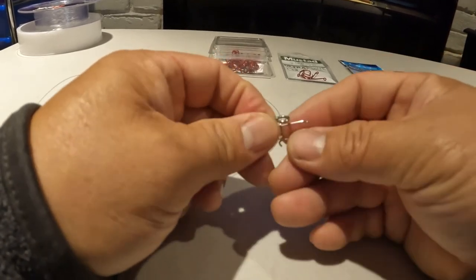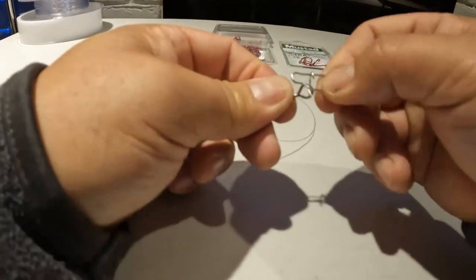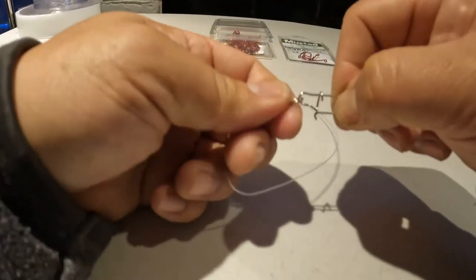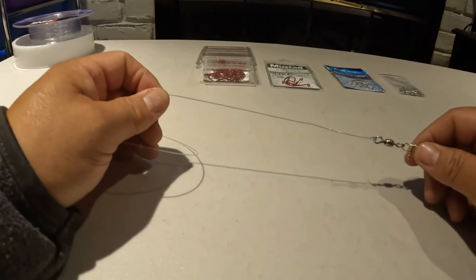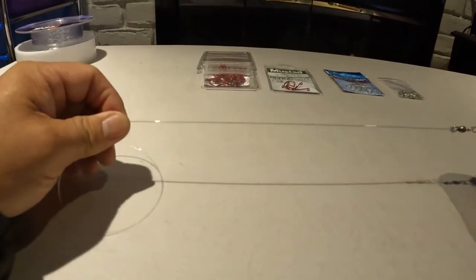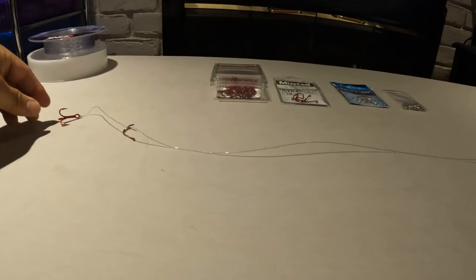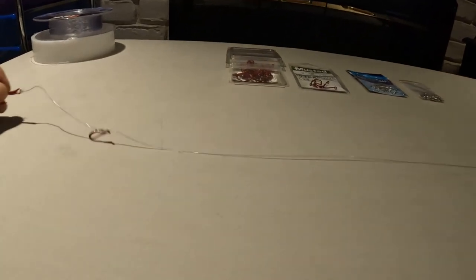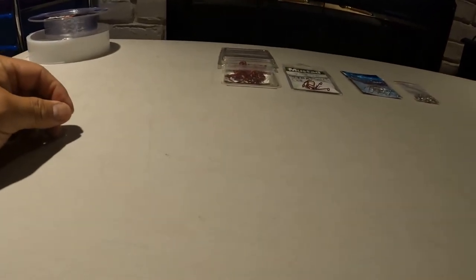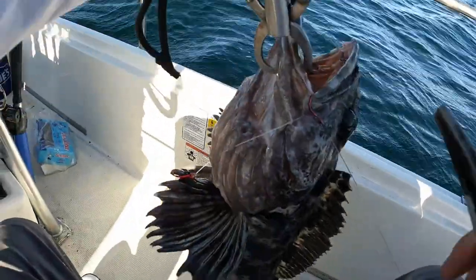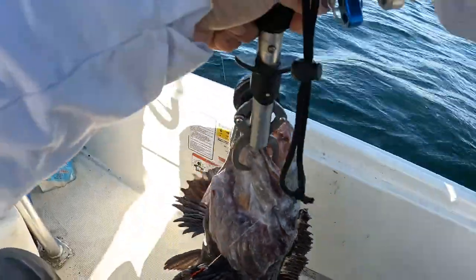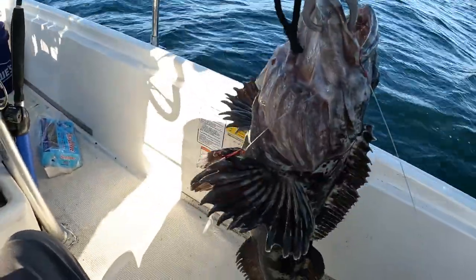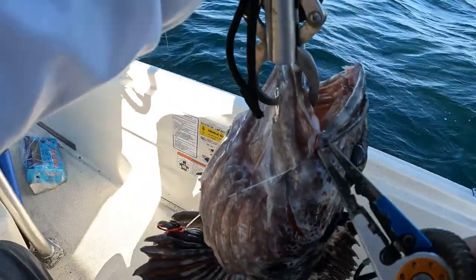However you have your pole set up, I use a sliding sinker setup or a fish finder setup, whatever you want to call it. That is my setup for the lingcod. And here's a video clip of why you should do this, is why I use the rig the way I do, because a lot of fish get bit on this hook right here.